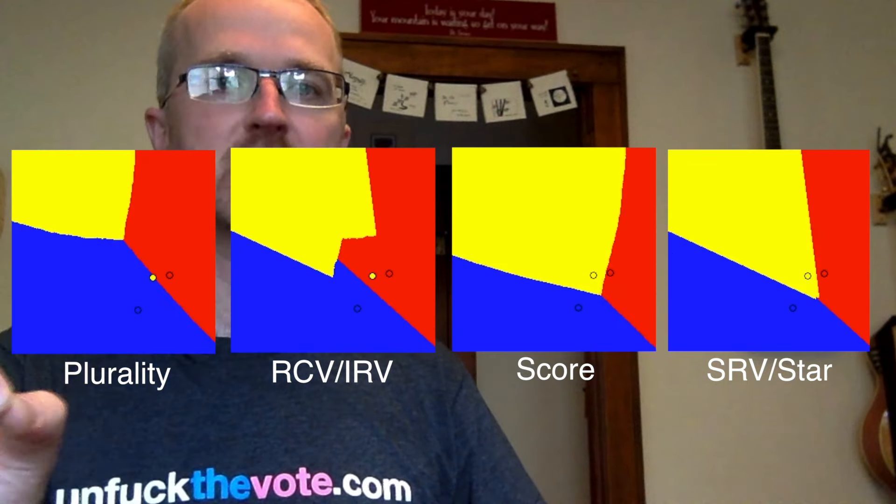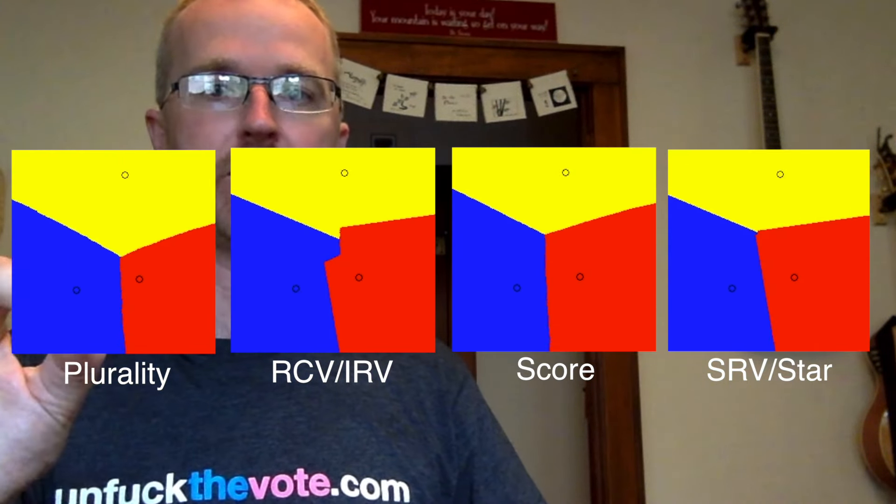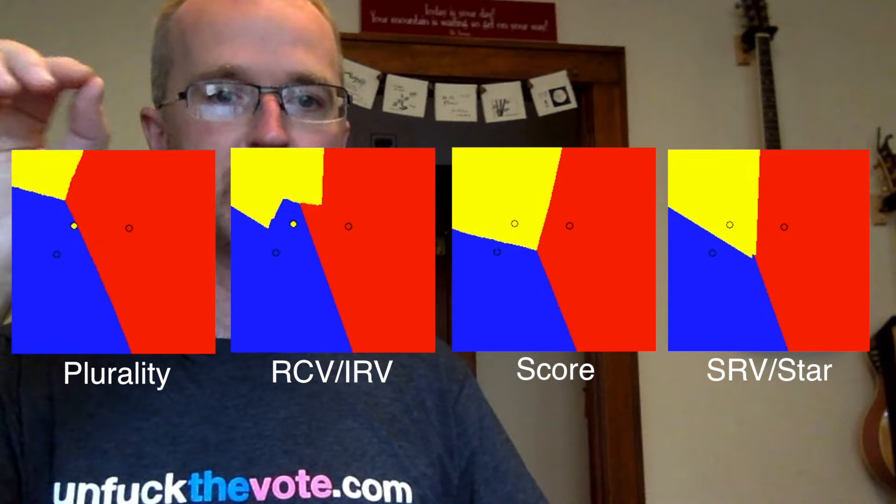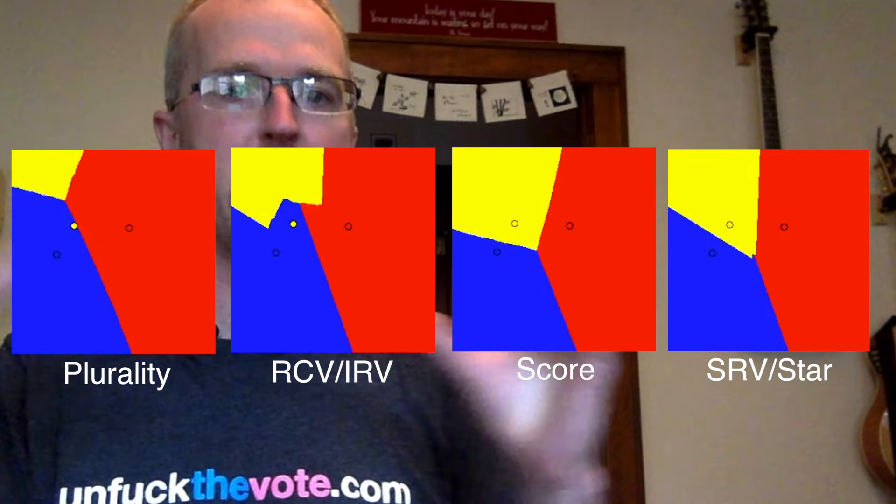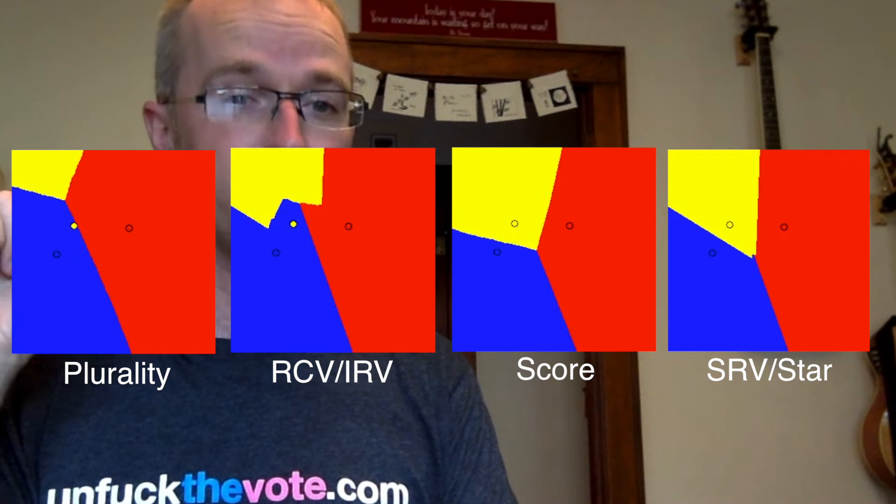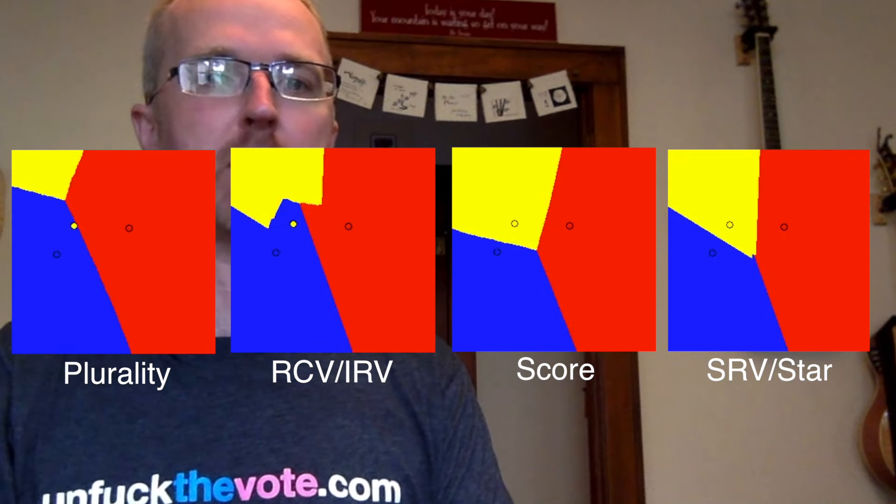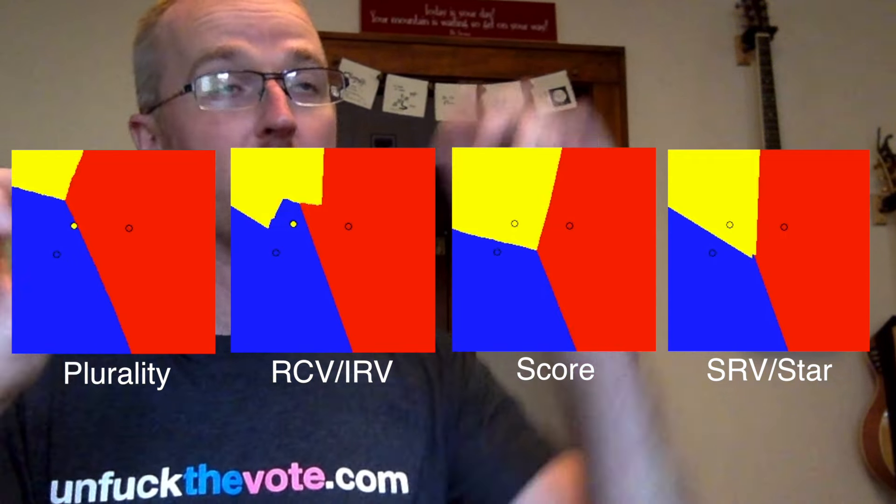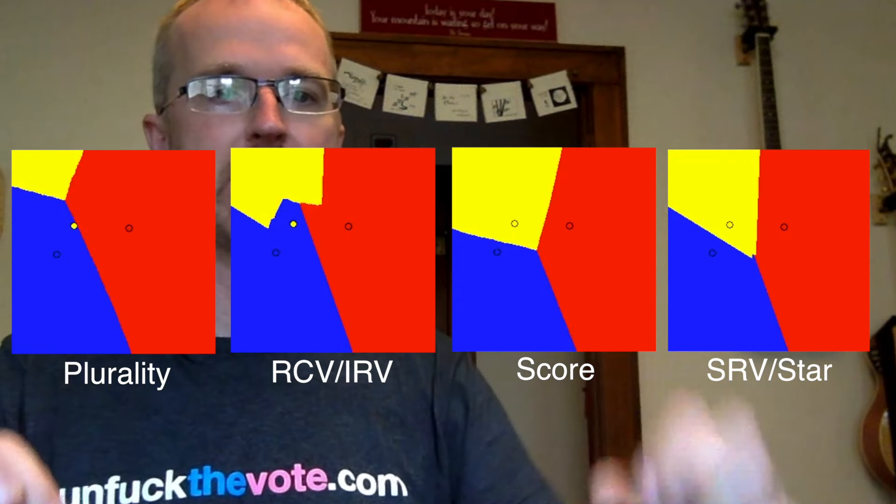Plurality voting can easily squeeze out a candidate in the middle of the field. You can see that the win region for this yellow candidate is dramatically diminished. That candidate doesn't even win in elections when they're right at the very center of public opinion because of where they are relative to the other candidates.